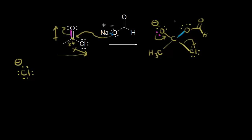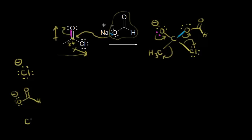Another possibility is when we reform our carbonyl, the electrons in blue come back off onto the oxygen, giving us the formate anion back as a leaving group. And a third possibility would be for these electrons to come off onto CH3, forming a carbanion with a lone pair of electrons and a negative one formal charge. So those are our three possible leaving groups.